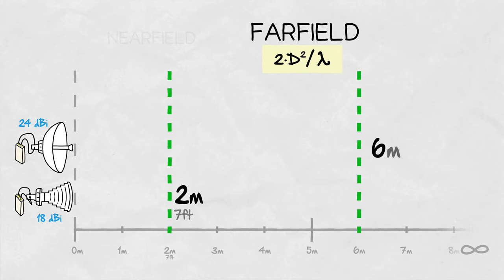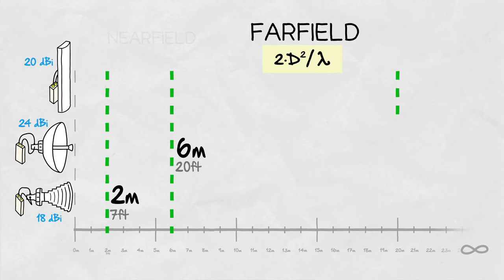For a 24 dBi gain dish, it's 6 meters. And for a 20 dBi pejoria sector, this distance is over 20 meters.